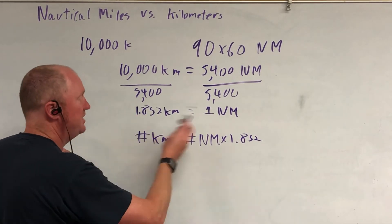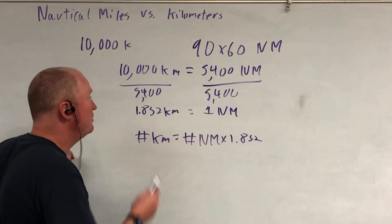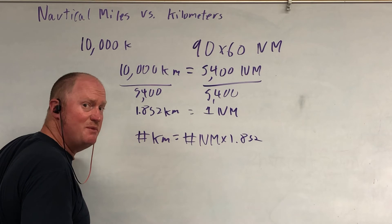So the number of kilometers in any distance is equal to the number of nautical miles times 1.852. Now by the way, I just rounded off. Since these are both based on the same thing, you know, the number you get, you can carry it to an unlimited number of decimal places.